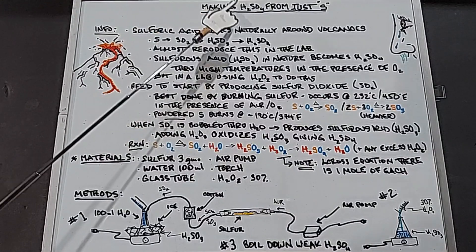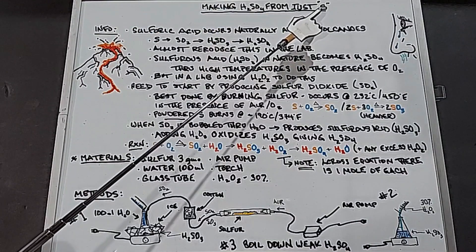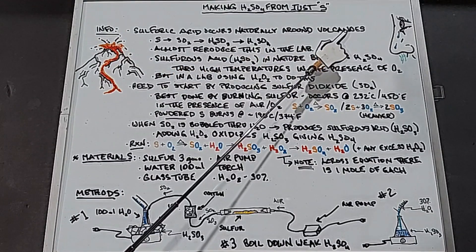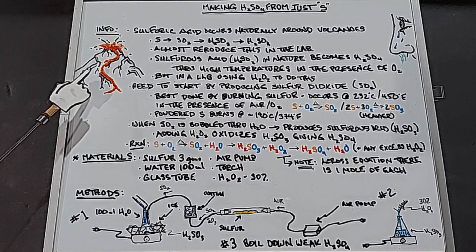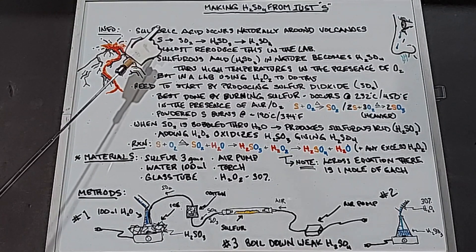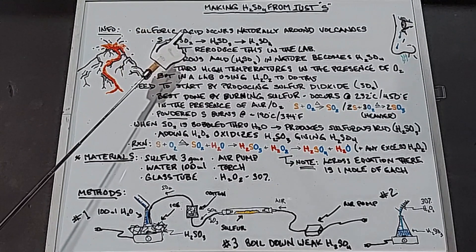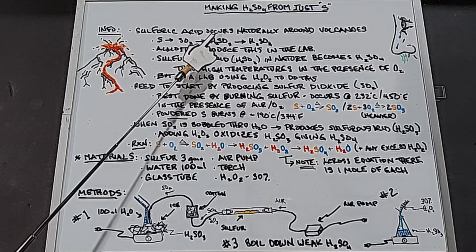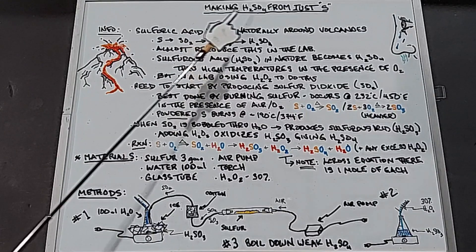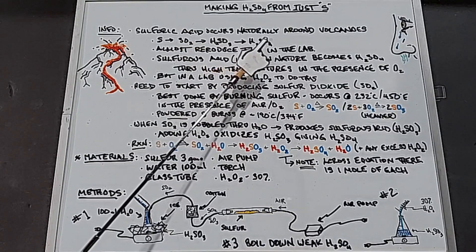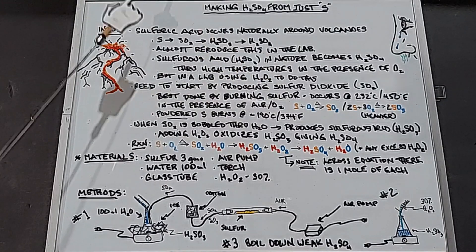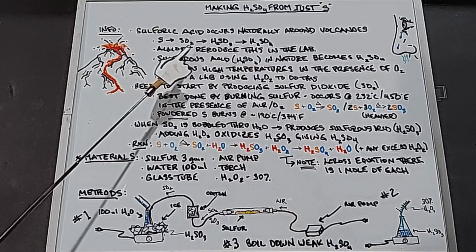This video covers making sulfuric acid starting with just elemental sulfur. Sulfuric acid occurs naturally around volcanoes by taking elemental sulfur and turning it into sulfur dioxide due to oxygen in the air. This becomes sulfurous acid (H₂SO₃) due to moisture in the air, and then becomes sulfuric acid due to oxygen. This whole process occurs around volcanoes and it's not uncommon to find sulfuric acid occurring right from elemental sulfur.